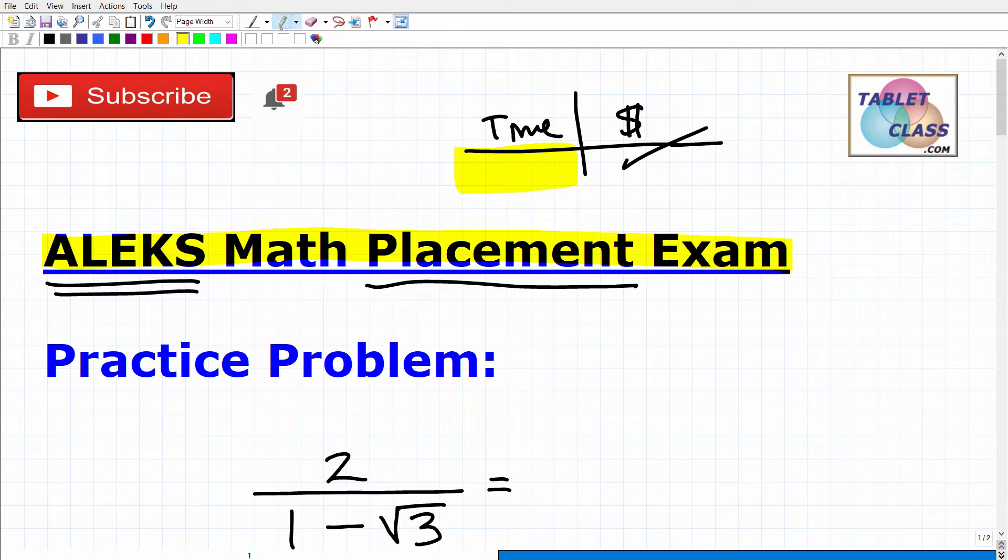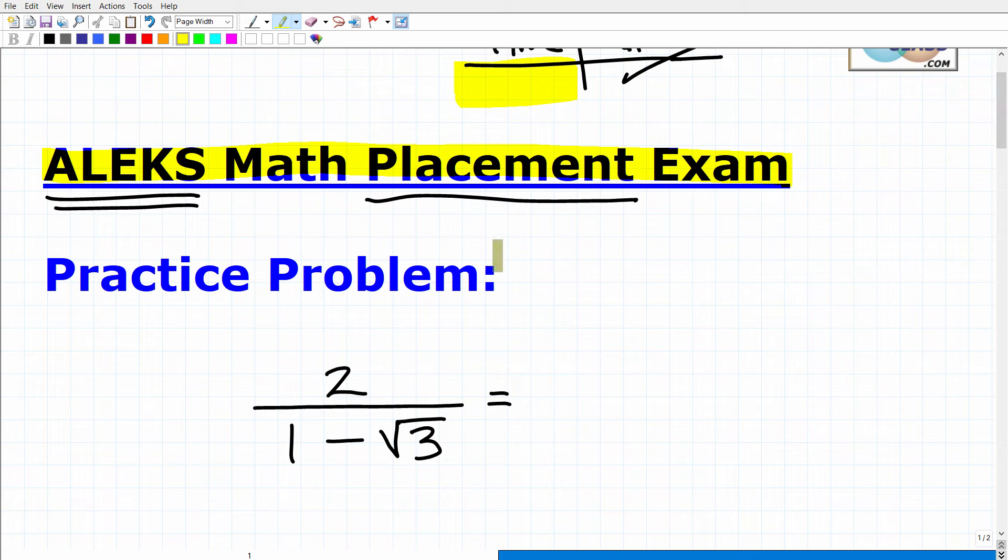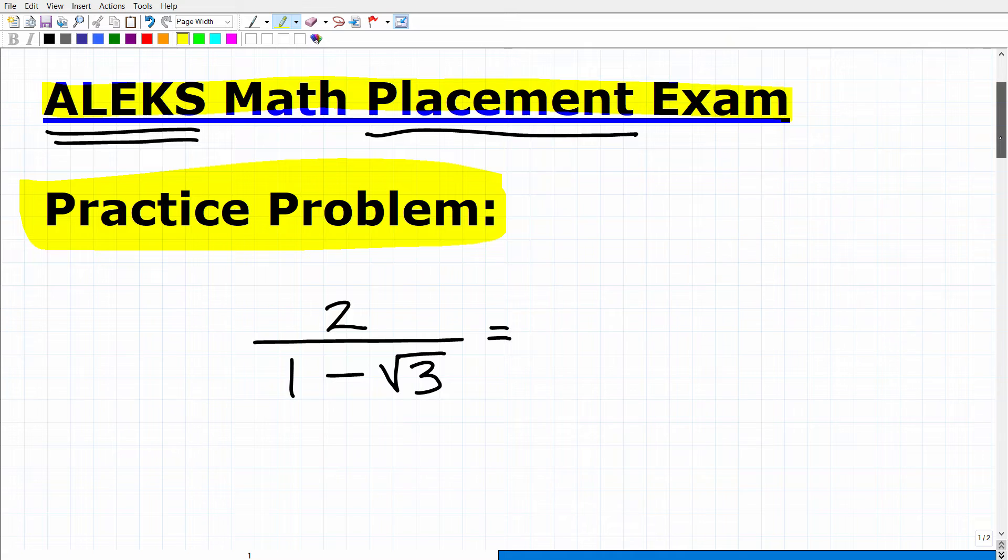But what we got in this particular video here is a practice problem that you should be able to do if you are fully prepared for the ALEKS math placement test. This is fundamental algebra. And let me show you the problem, and of course, I'm going to solve it here in a second. So, we have 2 over 1 minus the square root of 3.